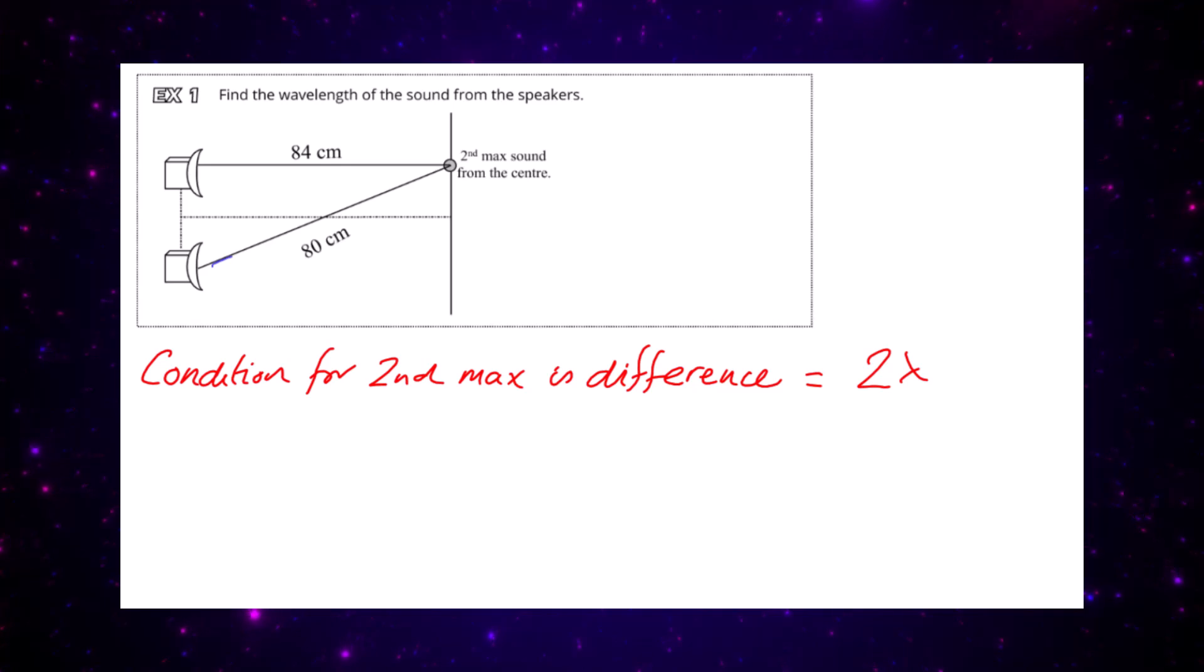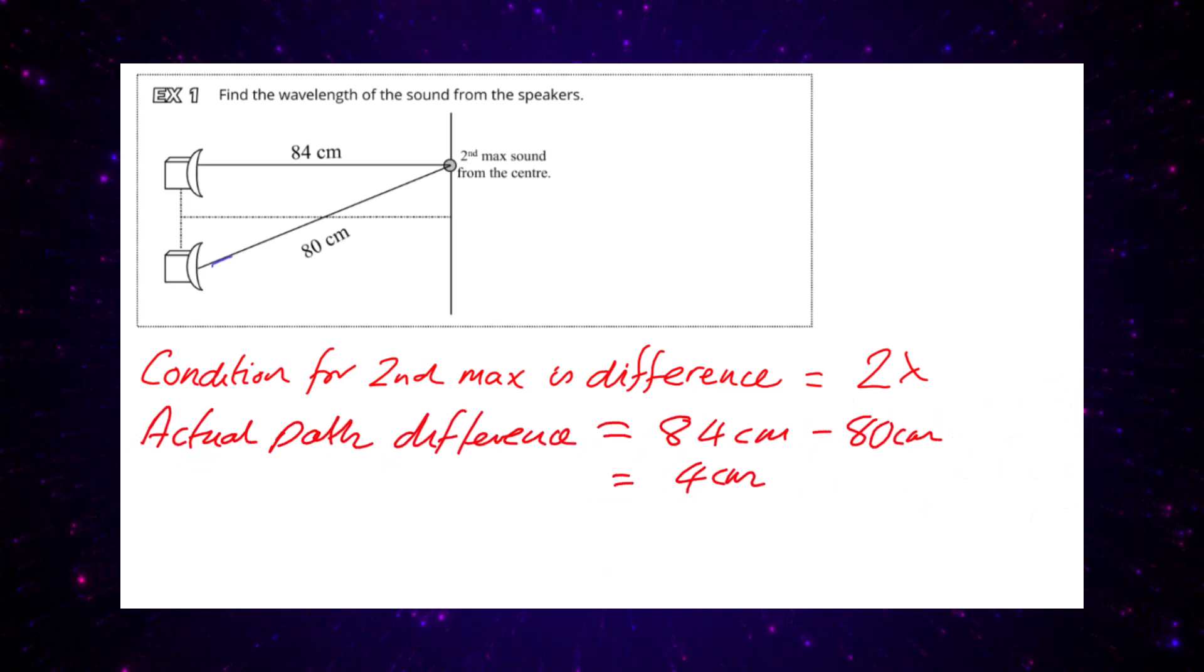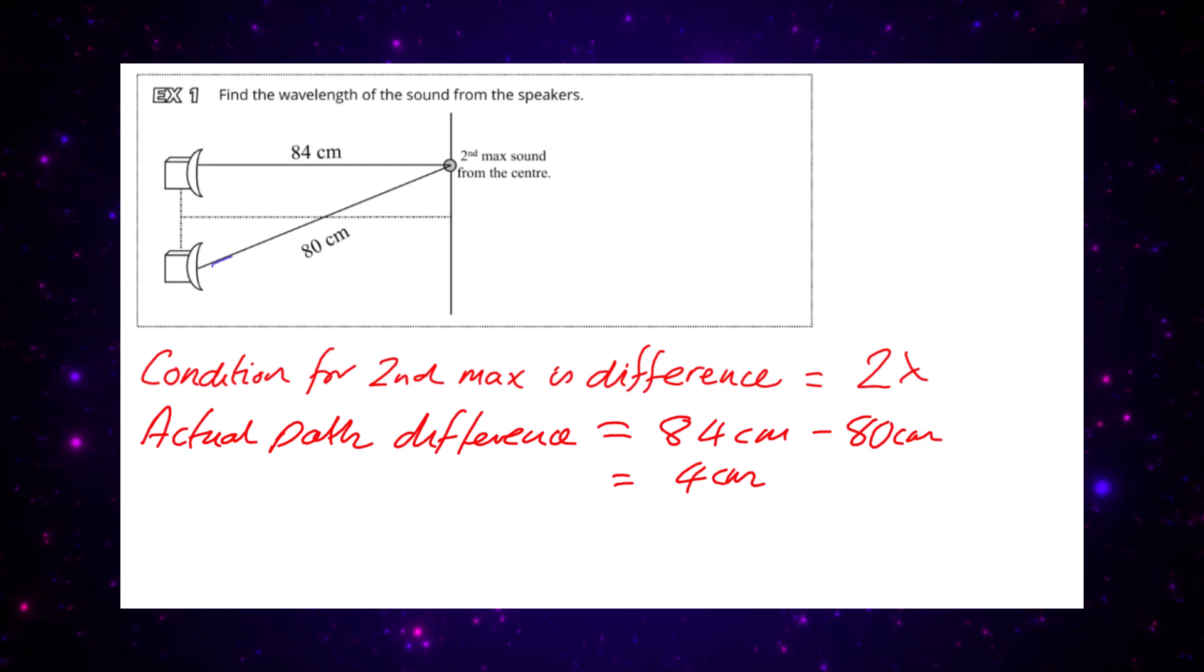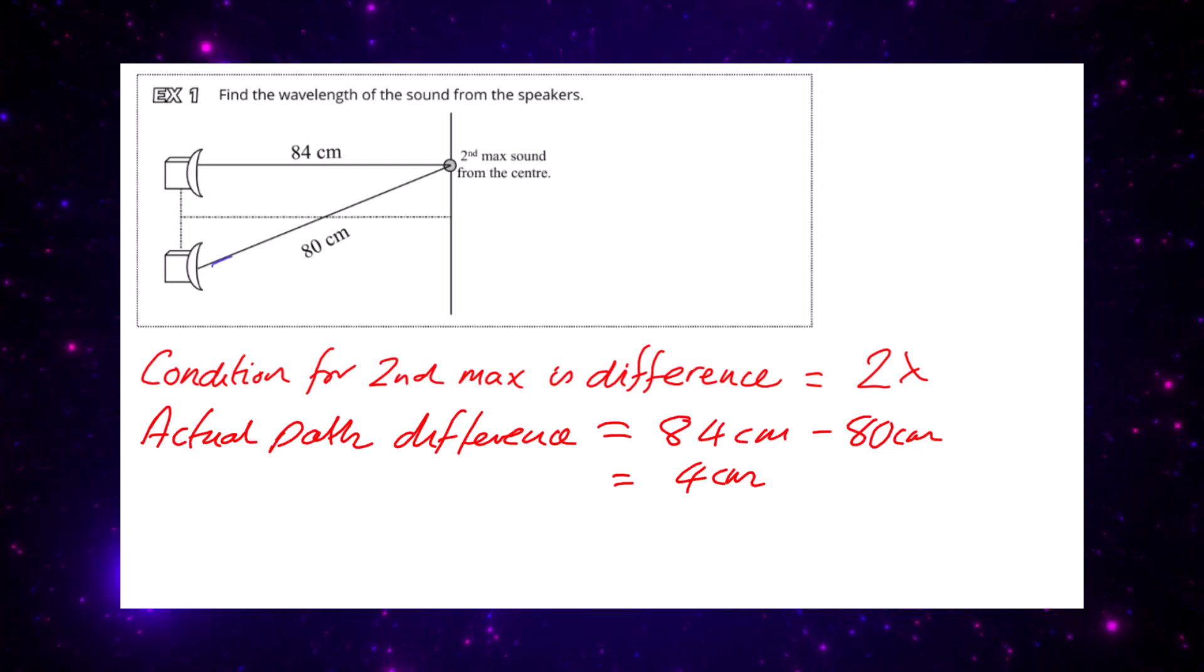What is the actual path difference from the diagram? We can see it's going to be 84 centimetres, take away the 80 centimetres, leaving us with 4 centimetres.